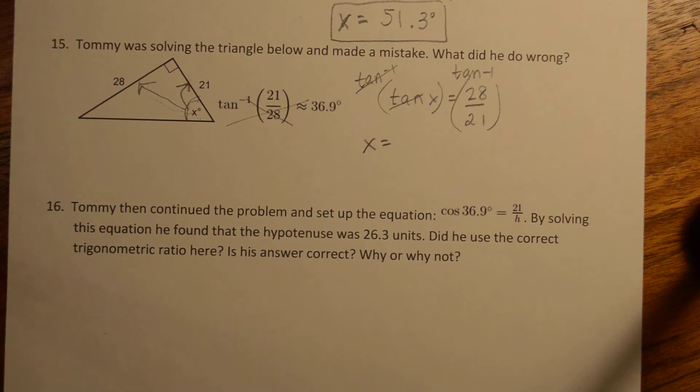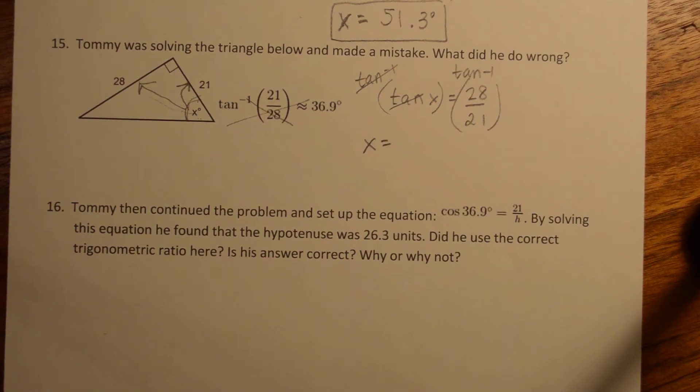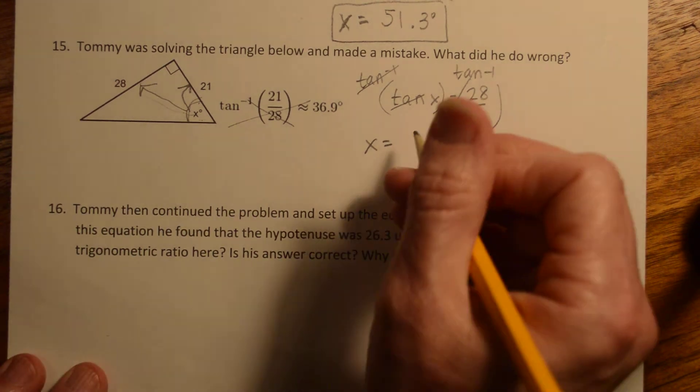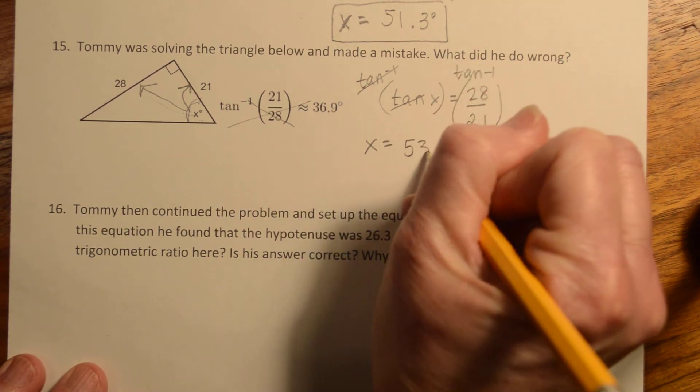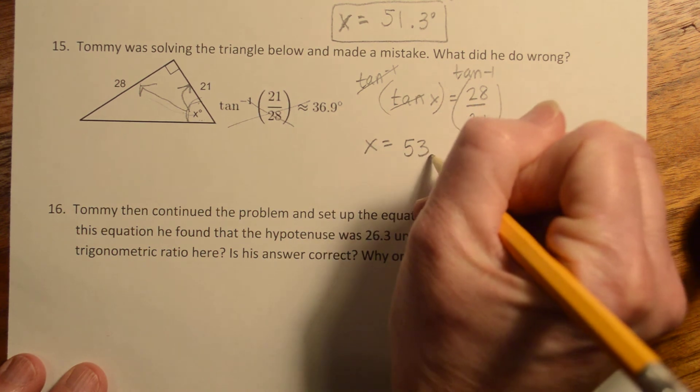And then with your calculator, you would do tan inverse of 28 divided by 21, and you would get x equals 53.1 degrees.